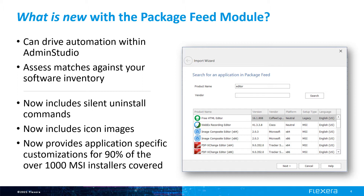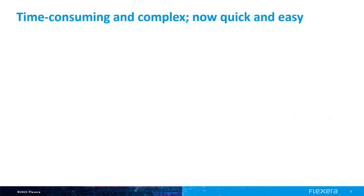The reason it's Windows Installer packages only is we're basically making it easy for you to take advantage of the many properties in the Windows Installer package that are available without having to research what they mean. And in the end, the result is we create a customization transform file that you would deploy alongside your MSI and perhaps any existing MST or transform files that you created on your own. So this is quite powerful and it changes the dynamic a little bit of how you use the package feed module.